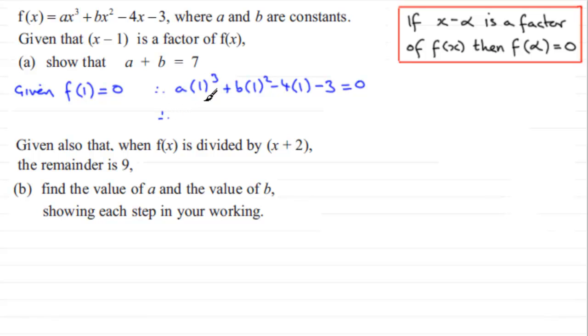If we work this out, we have one cubed which is one, one times a is a, one squared times b is b, and minus four minus three which is minus seven. If I add seven to both sides, we end up with a plus b equals seven.